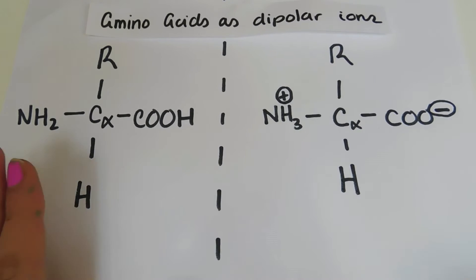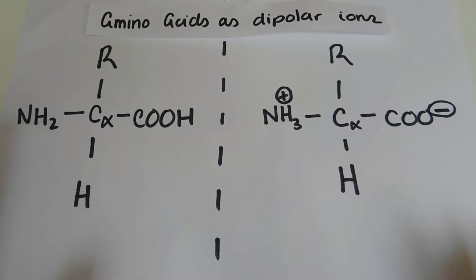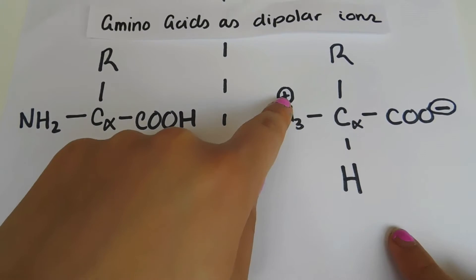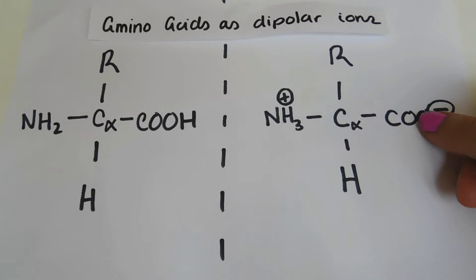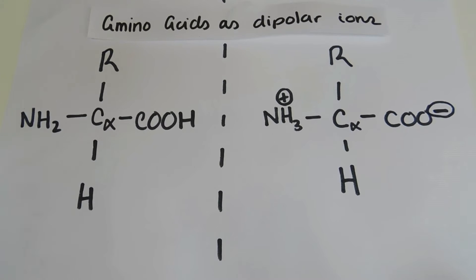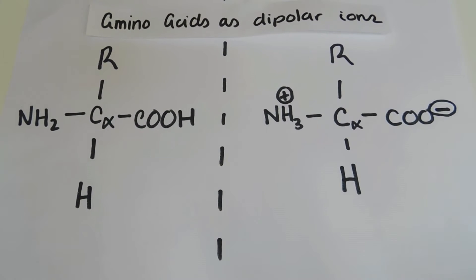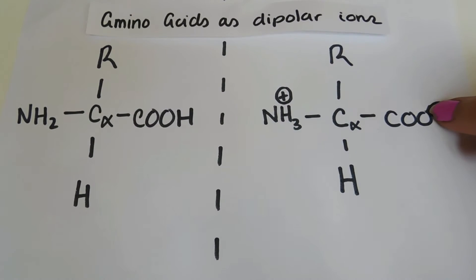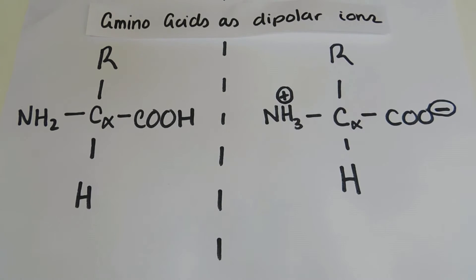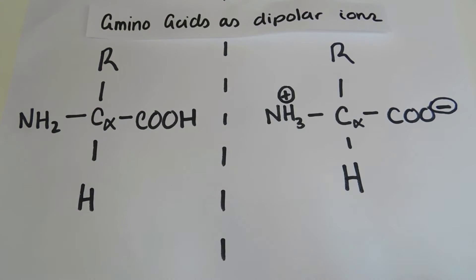At physiological pH, we have this general structure: here we have one extra hydrogen giving this a positive charge, and here we've lost a hydrogen giving the carboxylic acid group a negative charge. At physiological pH — the pH of the body — the amino group is going to be protonated and the carboxylic acid group is going to be deprotonated. The carboxylic acid group is in its conjugate base form, which we call carboxylate. So this is the general structure of your amino acids at physiological pH.